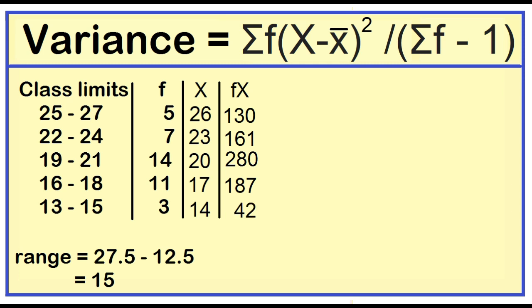Find the sum: 130, 161, 280, 187, and 42 is equal to 800. Find also the total frequency. 5 plus 7 plus 14 plus 11 plus 3 is equal to 40. The sample mean is 800 divided by 40 is 20.